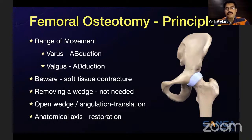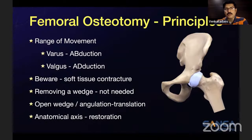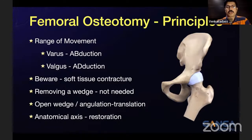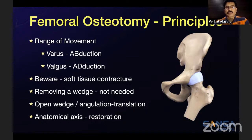Moving on to the basic principles of femoral osteotomy. You need to have the opposite range of movement when planning an osteotomy — if planning a varus osteotomy, you need free abduction. If you don't have free abduction and you do a varus osteotomy, you will create an iatrogenic varus deformity. Similarly, for a valgus osteotomy, you need a free range of adduction. Be aware of soft tissue contracture, particularly in cerebral palsy. In pediatric practice, it is not always necessary to remove a wedge — you can do an open wedge or angulation-translation osteotomy with a simple transverse cut.